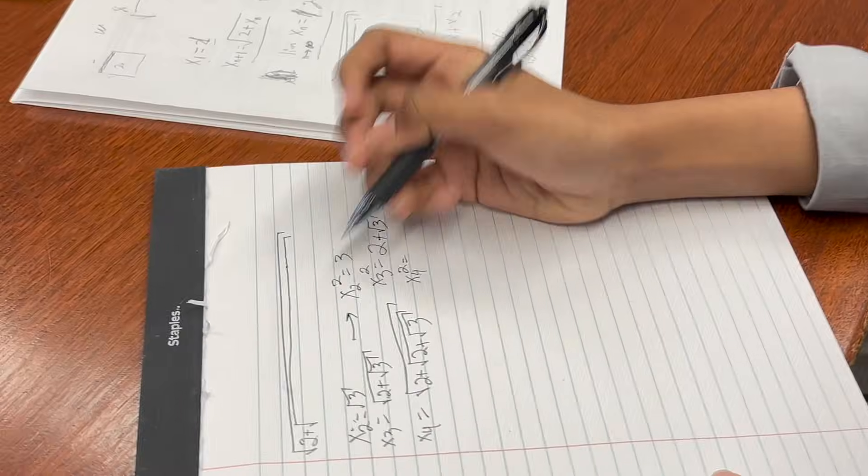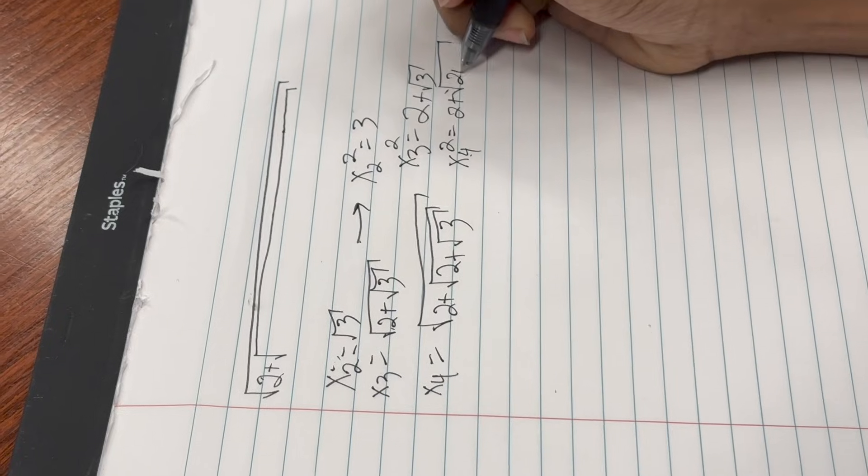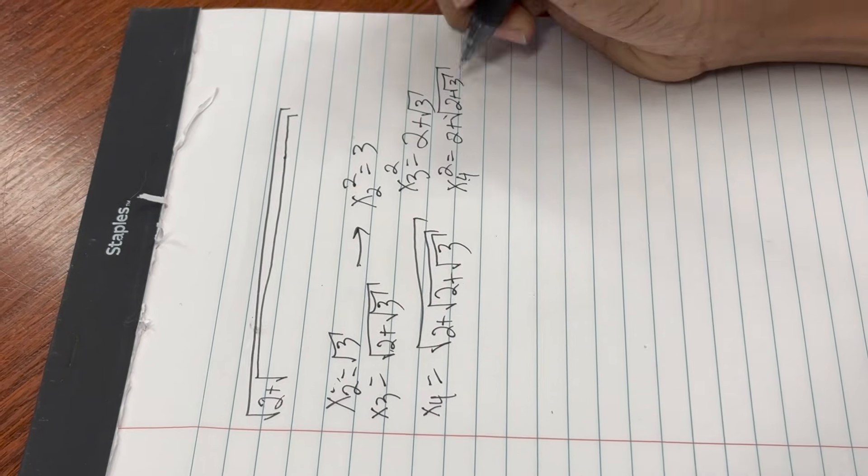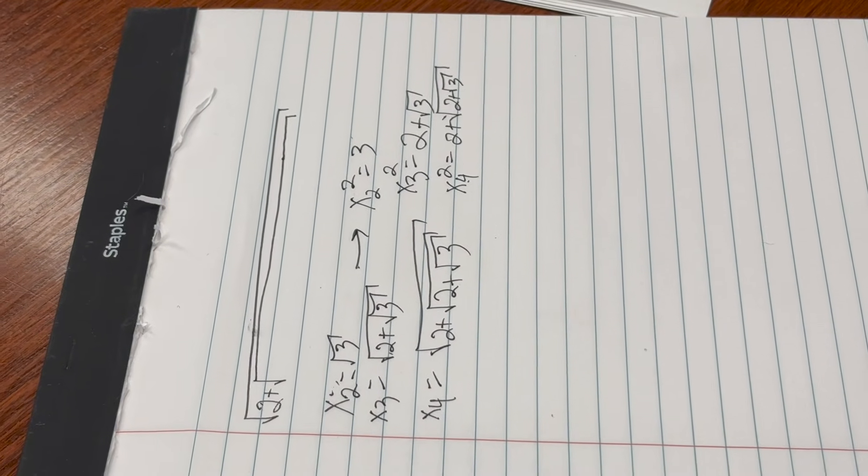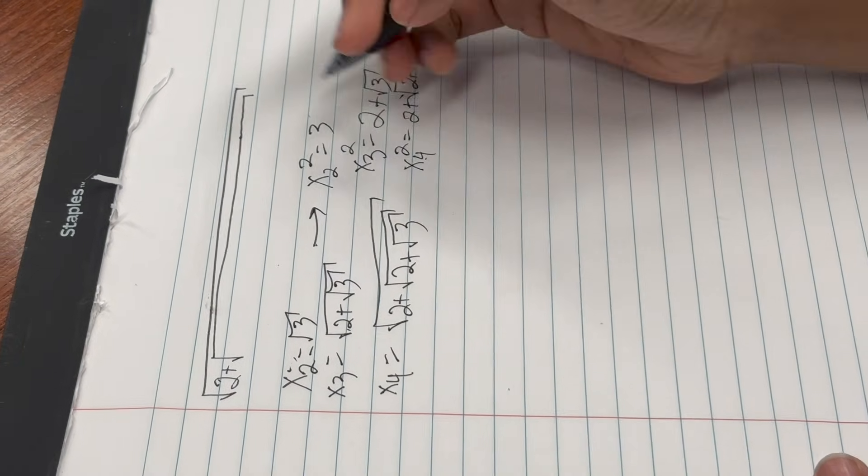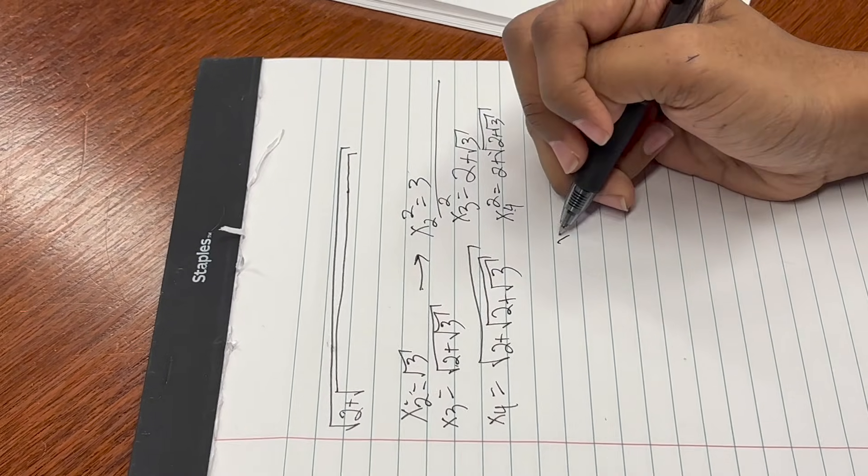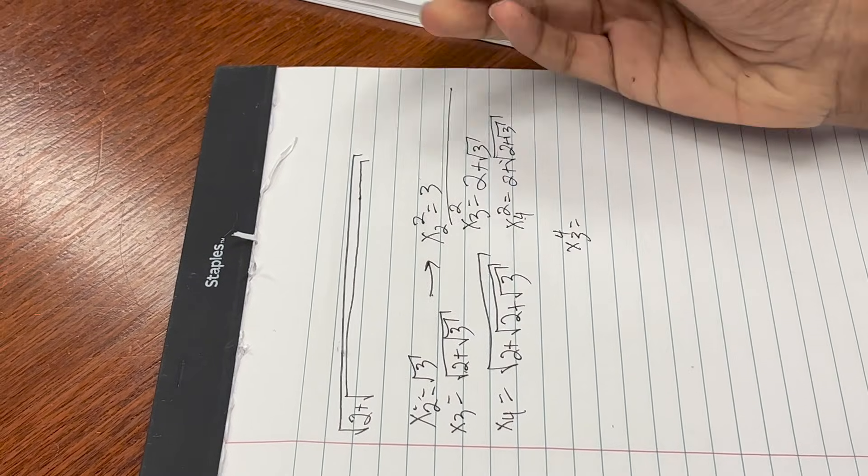So what happens if I square it? x3 is just, of course, this. x4 squared is, of course, this. And then I guess you'd have to ask, what happens if you square x3 and x4 again? And you get, by the binomial theorem, four plus three plus four root three.